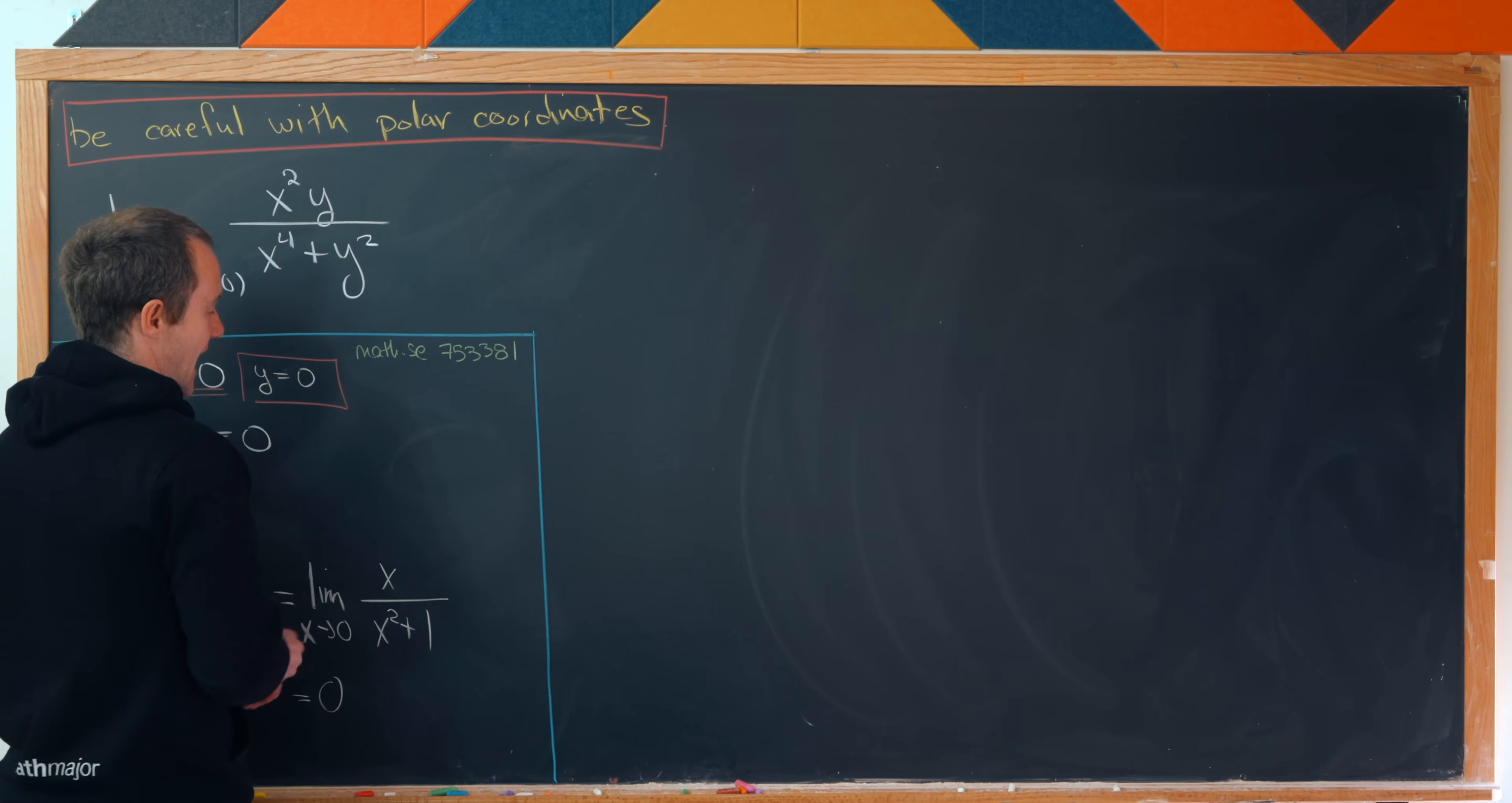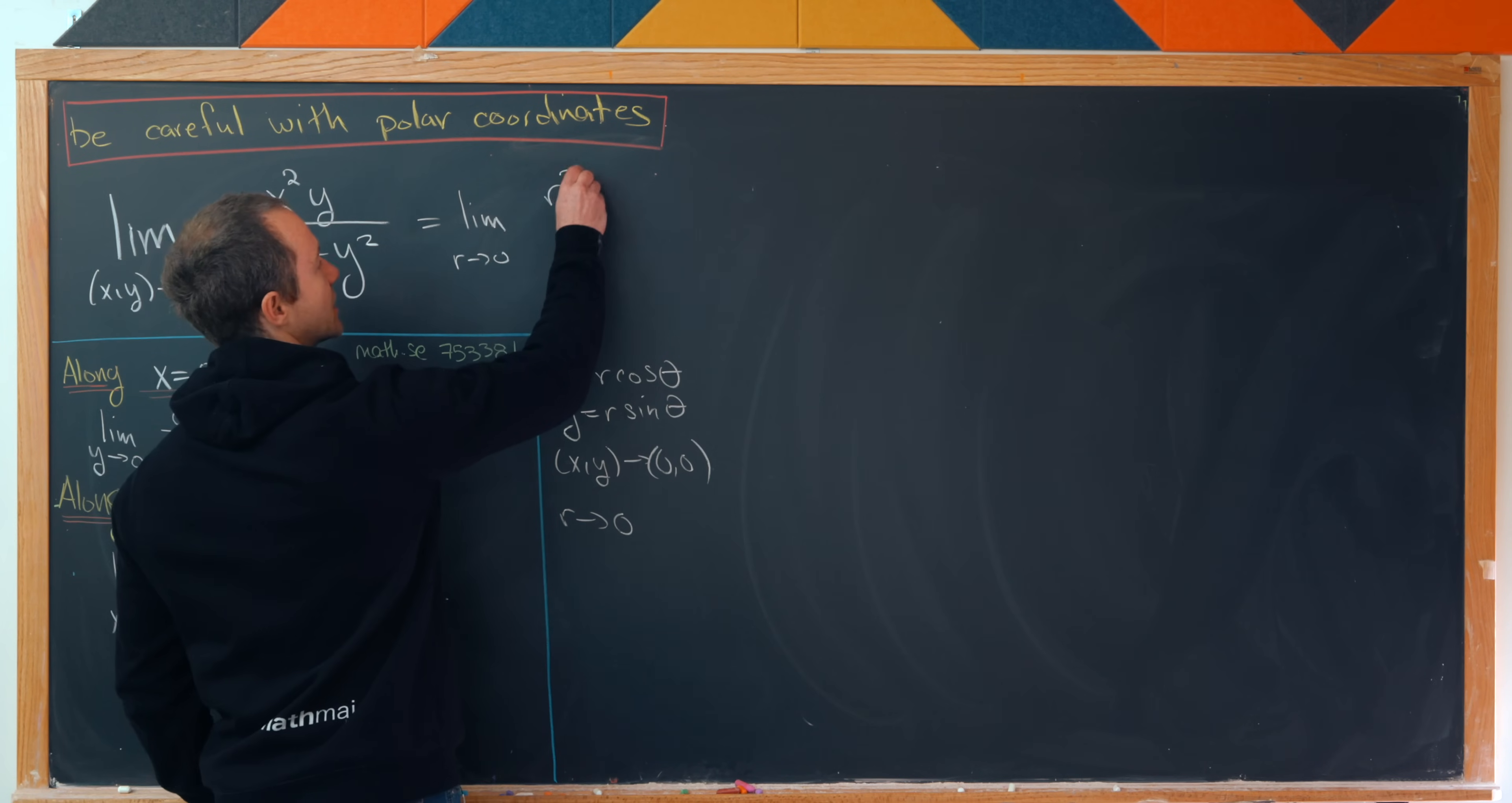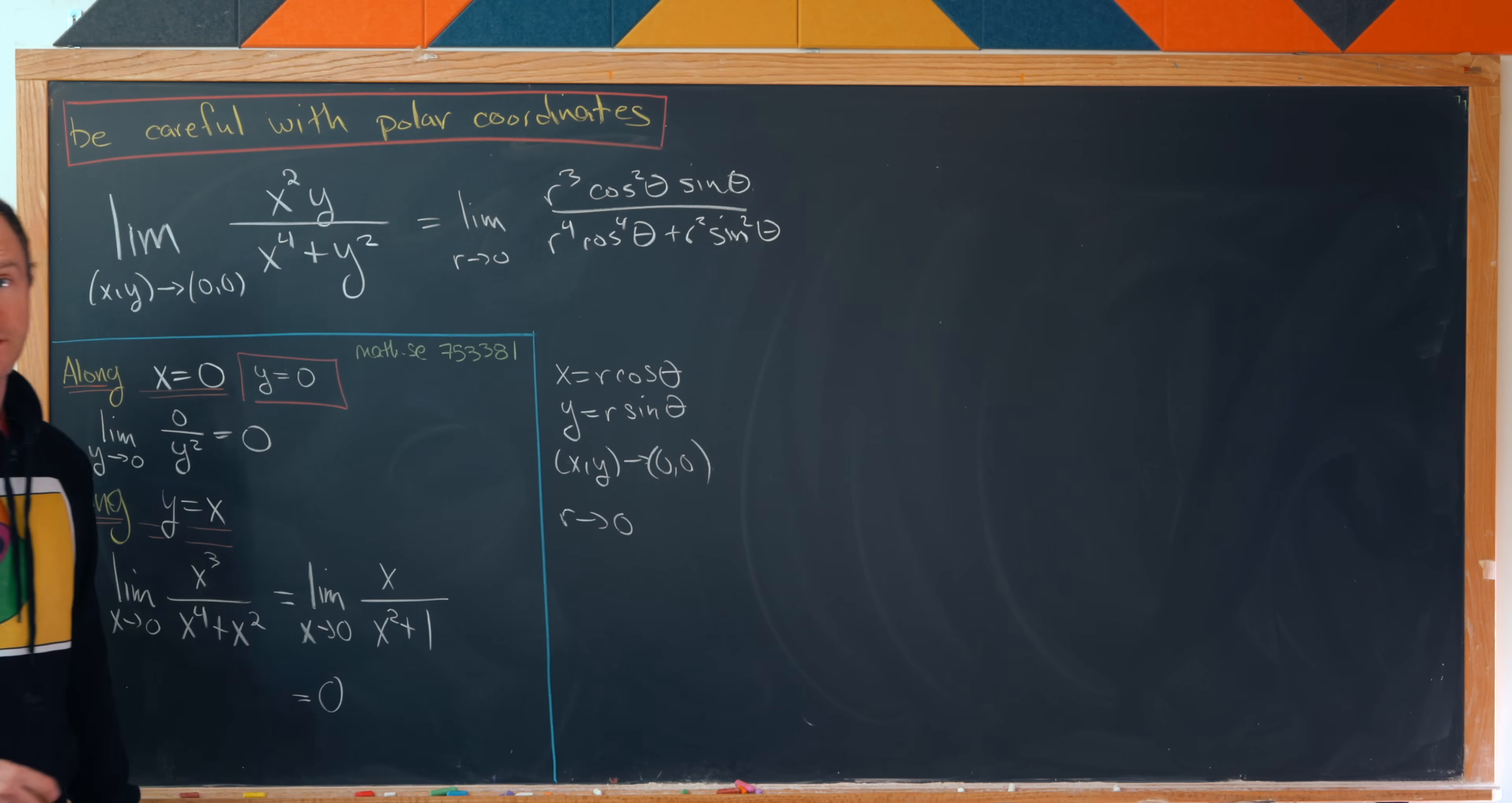So we'll set x equal to r cosine theta and y equal to r sine theta. So let's write that here. We have x is r cos theta and y is r sine theta. And notice that (x, y) approaching the origin is equivalent here to r approaching zero. Okay, so that's going to give us something like this. We have the limit as r goes to zero of r cubed times cosine squared theta times sine theta all over r to the fourth cosine to the fourth theta plus r squared sine squared theta. So we have something like that.